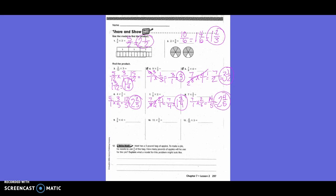Three-eighths times four — write it as three-eighths times four over one. Can I simplify before I begin? Yes — cross out four and eight. Common multiple is four: four goes into four once, four goes into eight twice. Three times one is three, two times one is two. Three-halves simplified equals one and one-half.